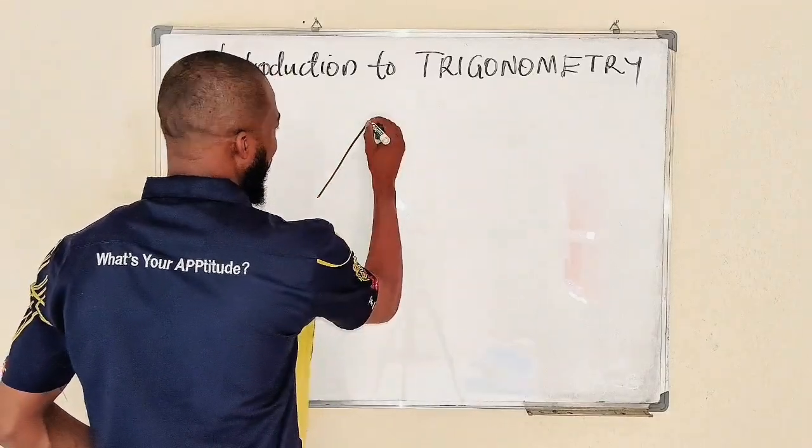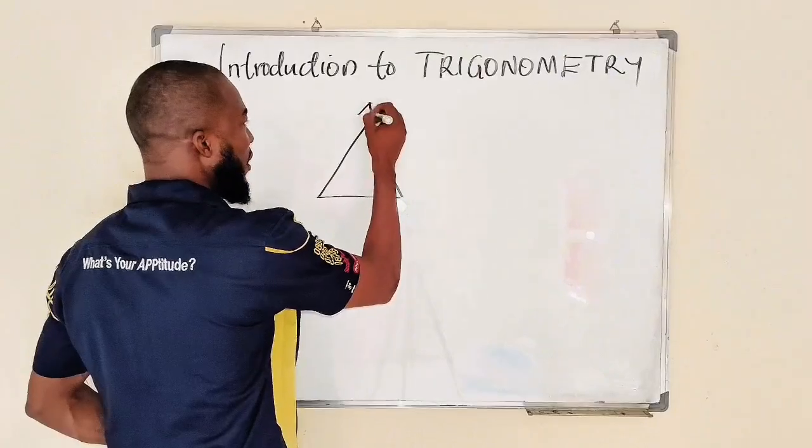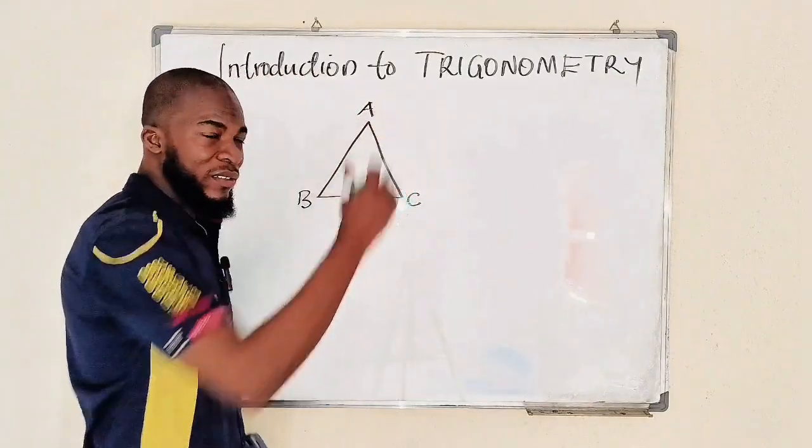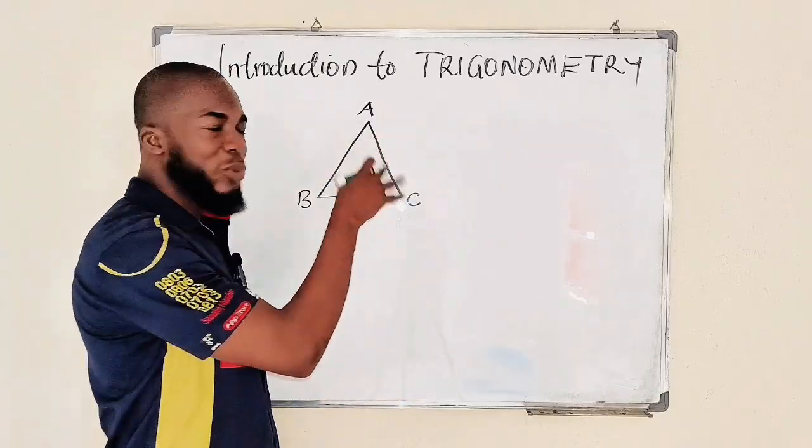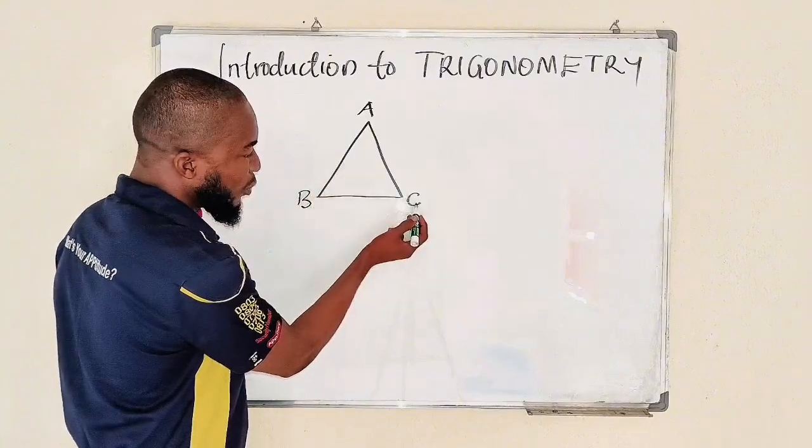Let's call this angle A, this one will be B, this angle C—capital letters. So we denote capital letters for angles and small letters for sidelines. This sideline opposite to C we call it small letter c, this one small letter a, and this one b.